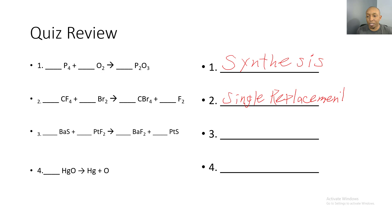Next, we have Ba which is barium, S which is sulfur, plus Pt and F. Notice we have four elements on both sides. Sulfur gets replaced with fluorine and fluorine gets replaced with sulfur — two elements got replaced, sulfur and fluorine. So this would be a double replacement reaction.